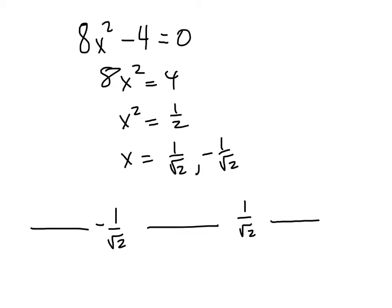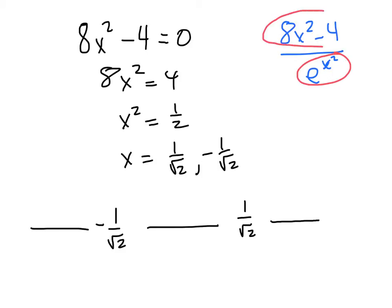We'll find the signs of the second derivative across the intervals. Our second derivative is 8x squared minus 4 over e to the x squared. The denominator is always positive — raising e, which is about 2.7, to any real exponent gives a positive value. So to find the sign of the second derivative, we only need to worry about the sign of the numerator. We'll test x equals 0 between the two critical values, x equals 1 to the right, and x equals negative 1 to the left. Note that 1 over the square root of 2 is approximately 0.7, so 1 and negative 1 are outside that range.